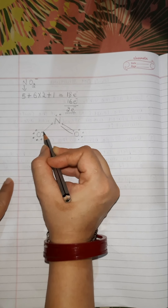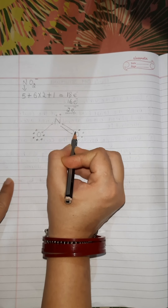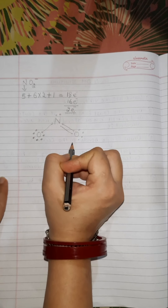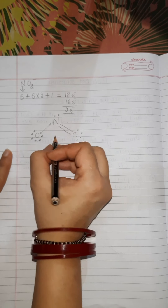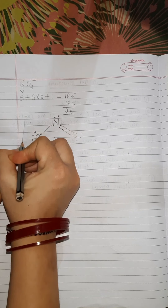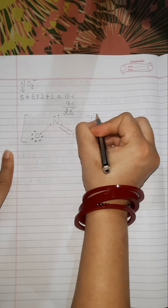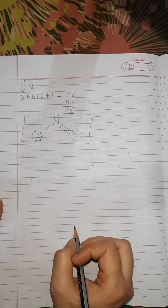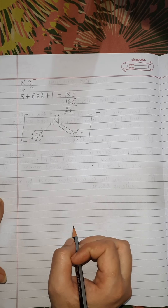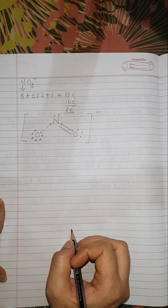Now nitrogen has 8 electrons — its octet is complete. This is the Lewis dot structure of NO₂⁻. I hope you have understood this. That's all for today. Have a nice day ahead.